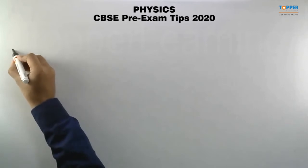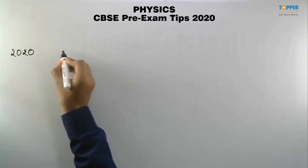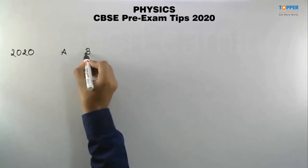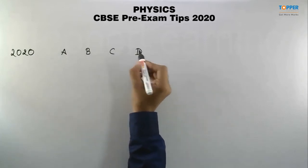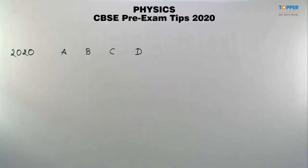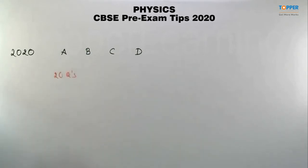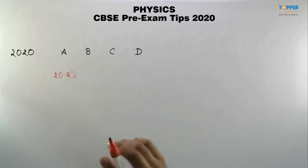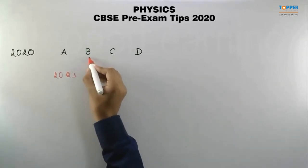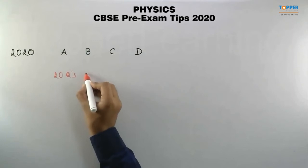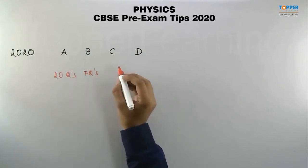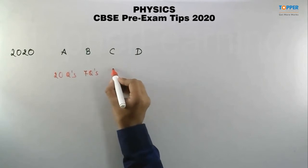The new pattern for 2020 has four sections in the question paper: A, B, C, and D. Section A contains 20 questions of one mark. Section B contains seven questions of two marks. Section C contains seven questions of three marks.